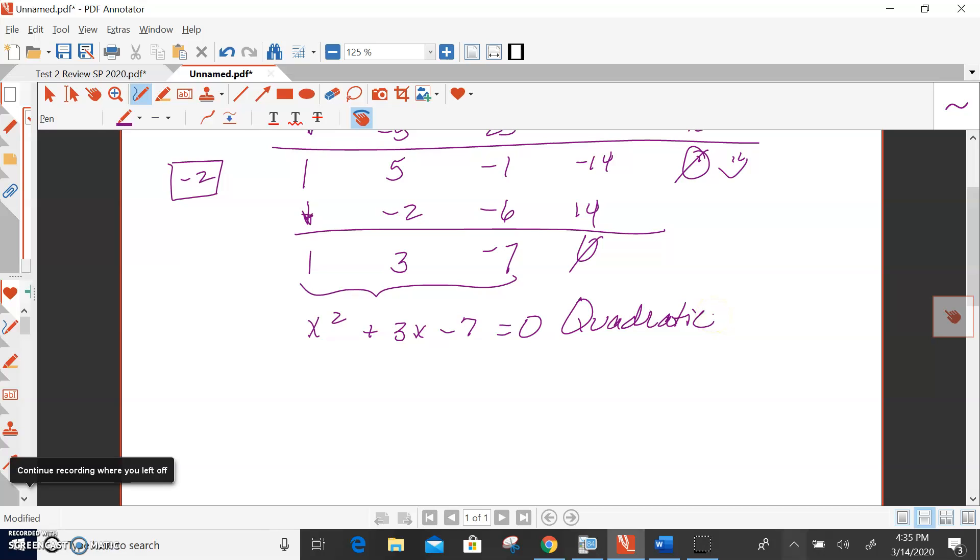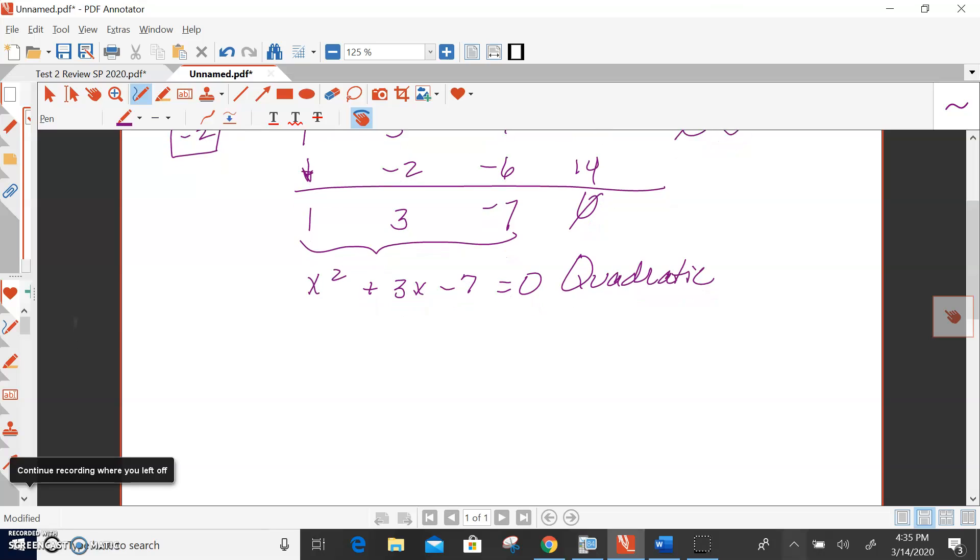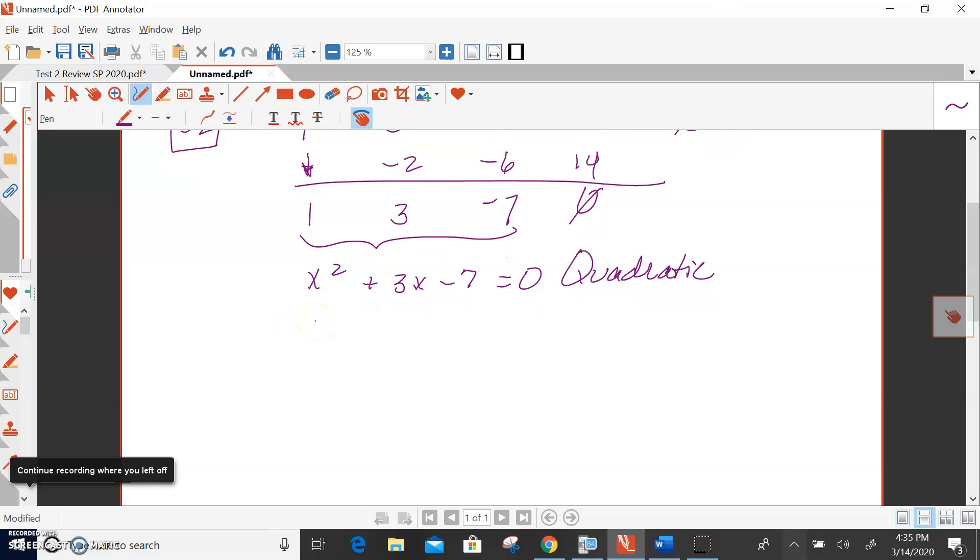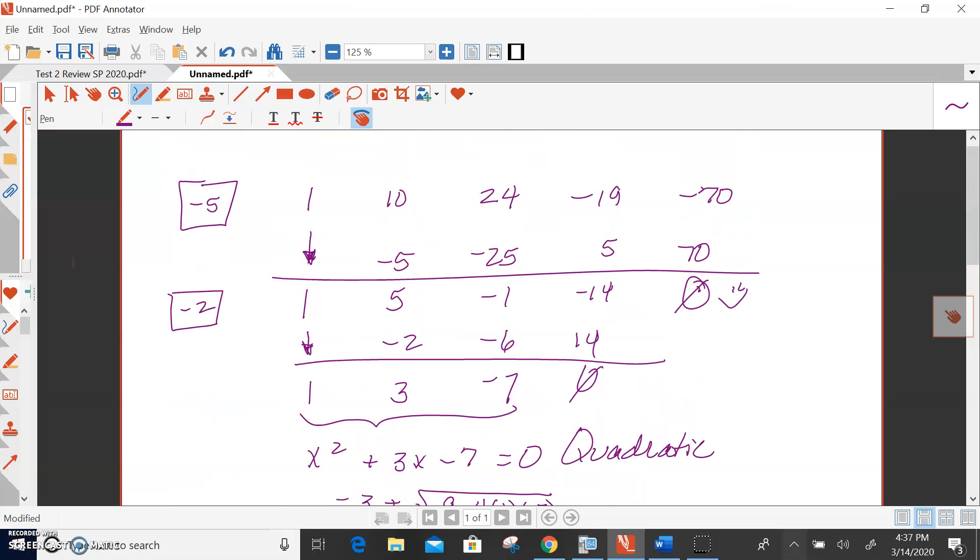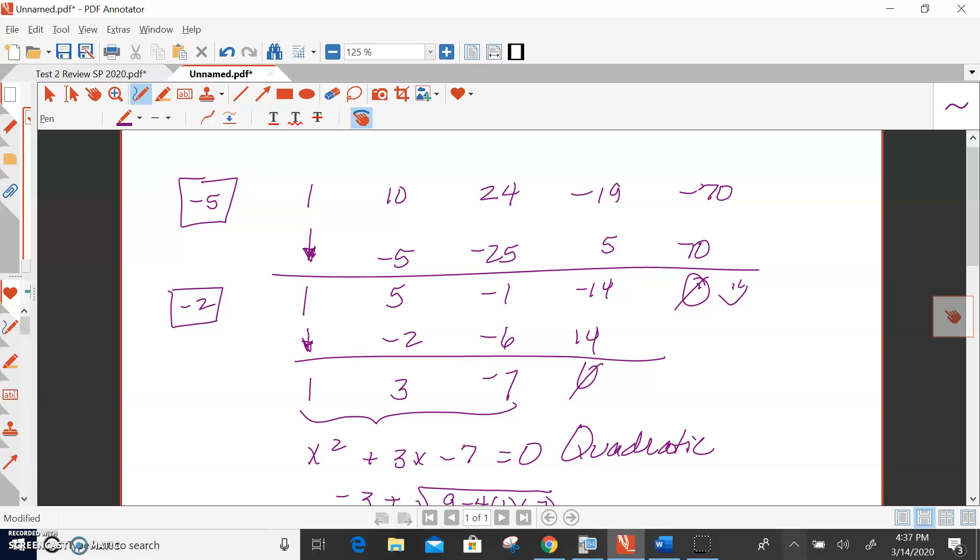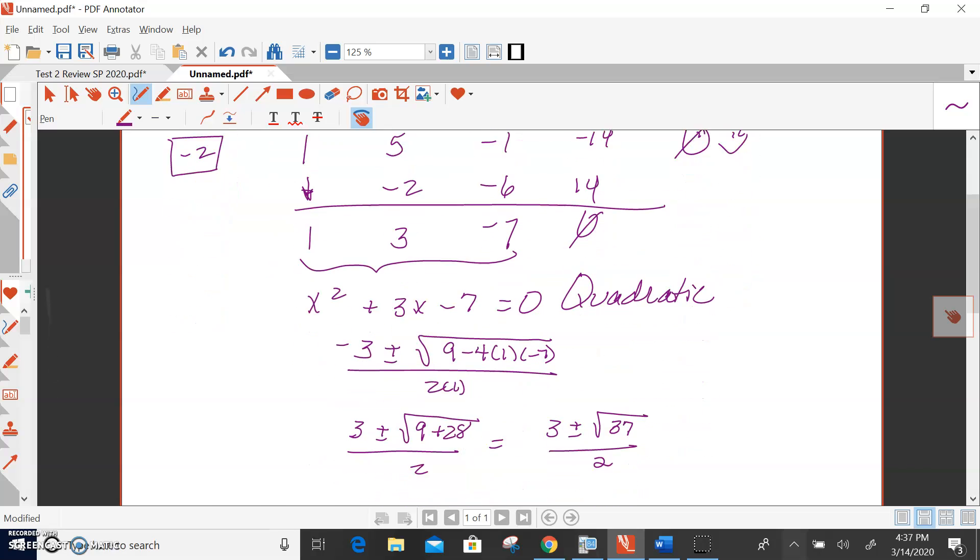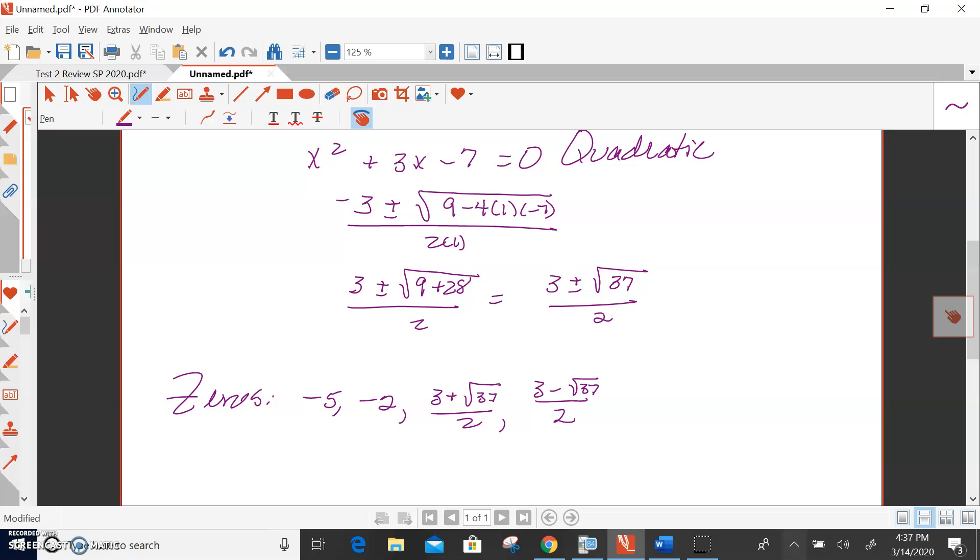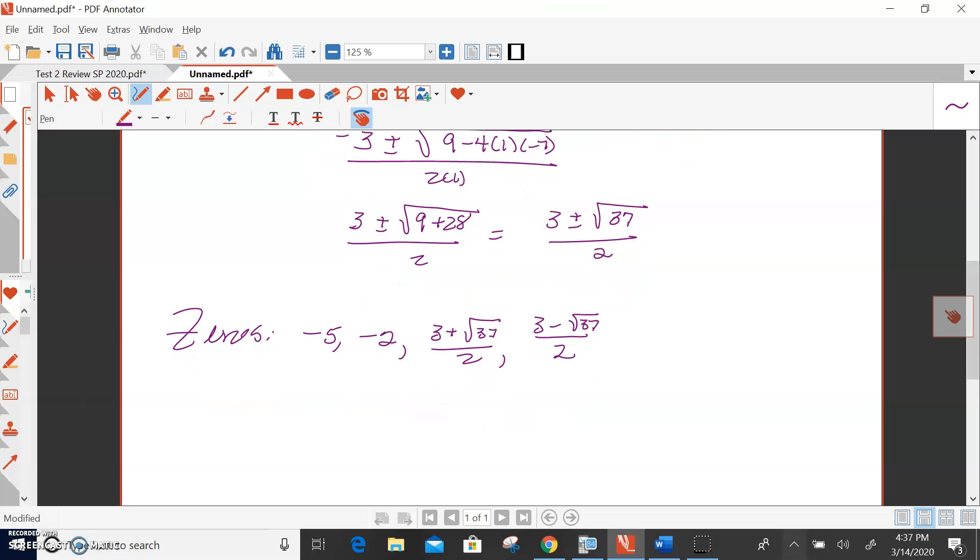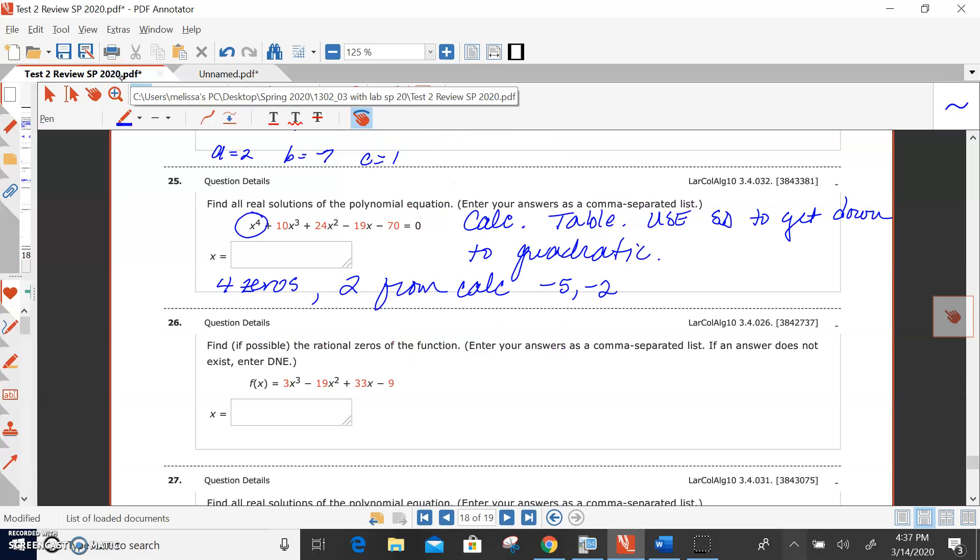So start on your calculator. Get as many as you can from your calculator. Then do repeated synthetic divisions to get it down to a quadratic. This quadratic is not going to factor, so we're going to have to use the quadratic formula. With the repeated synthetic divisions, negative 5, remainder of 0, negative 2, remainder of 0. Quadratic, that doesn't factor. So when we use the quadratic formula, we should get 3 plus or minus the square root of 37 over 2. So when I list my 0's separated by commas, I've got my first 0 of negative 5, then negative 2, 3 plus the square root of 37 over 2, and 3 minus the square root of 37 over 2. Those are my four 0's.